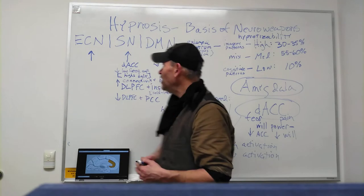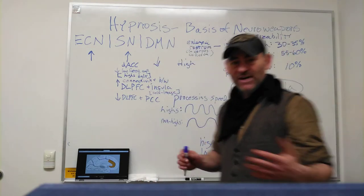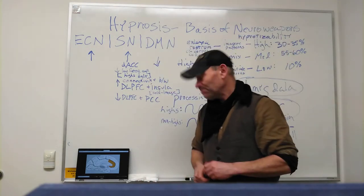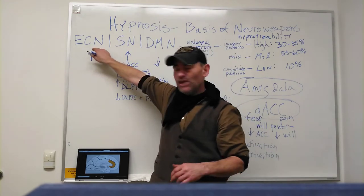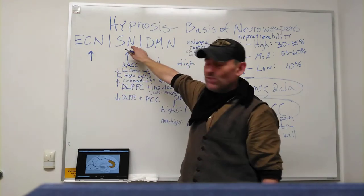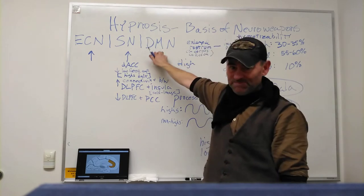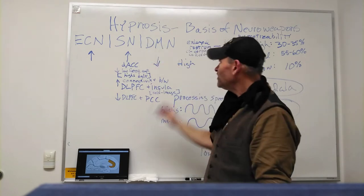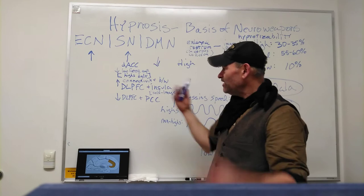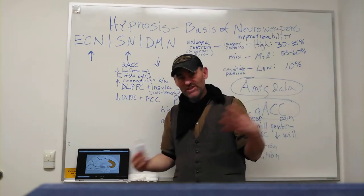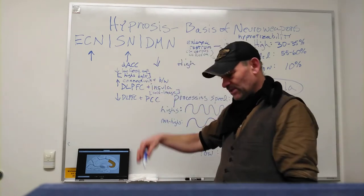How this works is that in the brain they have these different networks like there's an executive control network, a salience network, and a default mode network. So what we get out of these interactions in hypnosis is different levels go down and different levels go up.